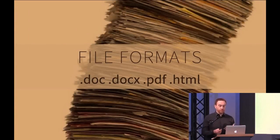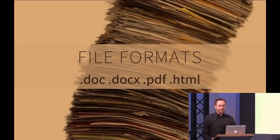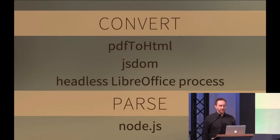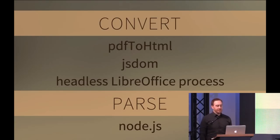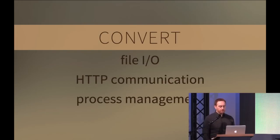We had to deal with a bunch of different file formats because people applying for jobs don't care about our lives — they just format their resume however they want: .doc, .docx, PDF, HTML, all sorts of different file formats. So we had a couple of different steps. First we had to convert them into a string: PDF to HTML, JSTOM to get from HTML to strings, and a headless LibreOffice process to convert from doc/docx and other ancient Microsoft formats. Then once we had the strings, we'd parse them using Node.js.